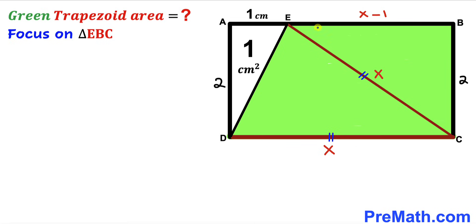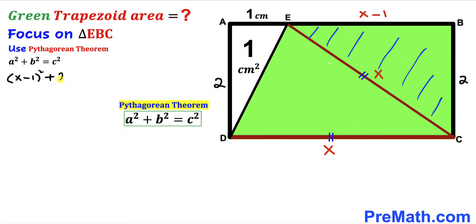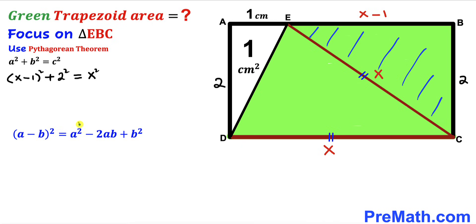Now let's focus on right triangle EBC and use the Pythagorean theorem to solve for x. The Pythagorean theorem states a² + b² = c². In our case, the hypotenuse is x and the two legs are (x minus 1) and 2. Substituting, we get (x − 1)² + 2² = x². Recalling the identity (a − b)² = a² − 2ab + b², we expand the left side.